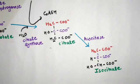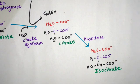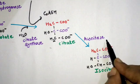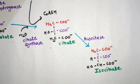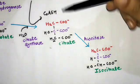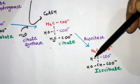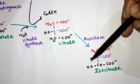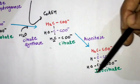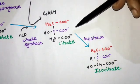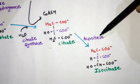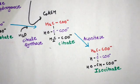In the next step, citrate is converted to isocitrate. No molecule exchange takes place, but the position of the OH group changes — in citrate the OH is in one position, while in isocitrate the position has shifted. This reaction takes place with the help of aconitase enzyme. This is the second reaction of the TCA cycle.